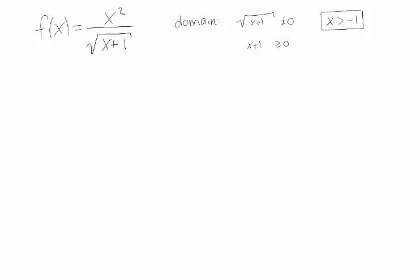If it's less than minus 1, I'm taking the square root of a negative number. And if it's equal to minus 1, I'm dividing by 0. But also, I should have a vertical asymptote at x equals minus 1. Because again, if I have a minus 1, I'm dividing by 0. The top's not 0. So it should be a vertical asymptote there.